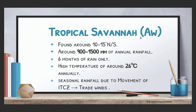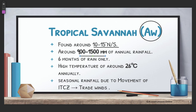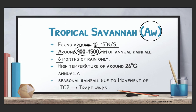Next is the tropical savanna, which is your AW climate. It can be confusing because you may mix it up with the AM climate. The tropical savanna is found around 10 to 15 degrees north and south. It has around 900 to 1,005 mm of annual rainfall — this is a very important characteristic. When looking at a climograph, you use the amount of rainfall to determine whether it is a tropical savanna or a tropical monsoon. Another distinguishing characteristic of the tropical savanna is 6 months of rain and 6 months without rainfall.